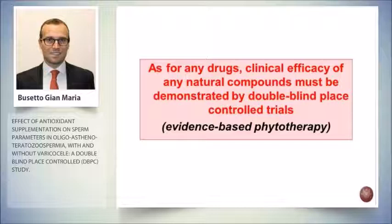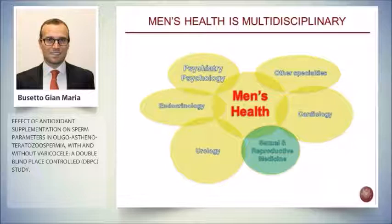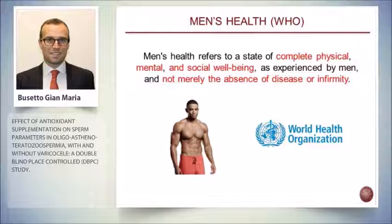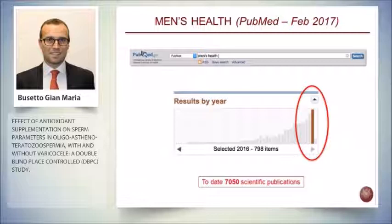The conclusion of this study: as with any drug, clinical efficacy of natural compounds must be demonstrated by double-blind, placebo-controlled trials. Moving to a broader perspective, sexual and reproductive medicine are just part of men's health — a multidisciplinary issue. The WHO defines men's health as a state of complete physical, mental, and social well-being as experienced by men, not merely the absence of disease. Infertility is one important parameter, and the growing number of publications — over 7,000 papers on male infertility — shows increasing interest year by year.